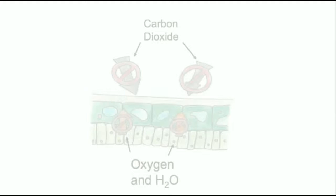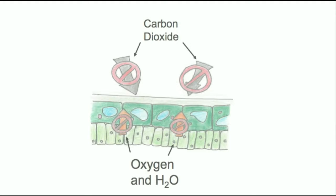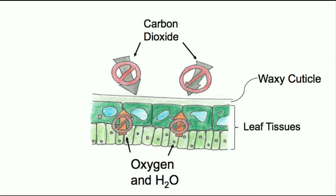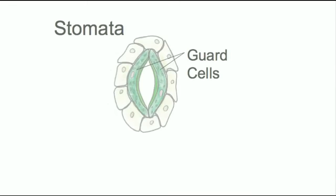The cuticle reduced water loss and appeared to hinder movement of gases in and out of the plant. Evolution of stomata regulated this. The earliest land plants evolved into an atmosphere rich in carbon dioxide, and as a result this meant that there was less water loss via transpiration through the stomatal opening.